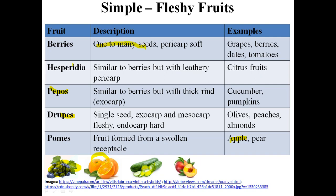In berries, the fruit has one to many seeds and the pericarp is soft. Examples are grapes, dates, and tomatoes. Hesperidia have an outer leathery pericarp and are similar to berries. Pepos are also similar to berries but have a thick rind, meaning the exocarp is harder and thicker. Examples of hesperidia are all kinds of citrus fruits, while examples of pepos are cucumber and pumpkin.